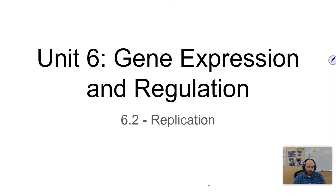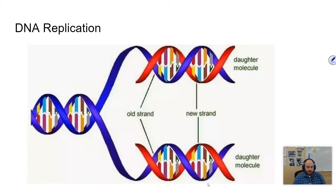So now we're going to be talking about DNA replication. DNA replication is the process by which one DNA strand is copied and you then have two identical DNA strands. There's a particular way that this occurs, and it's very important that this mechanism be carried out correctly, because errors can cause mutations, which we will be talking about in a later video.